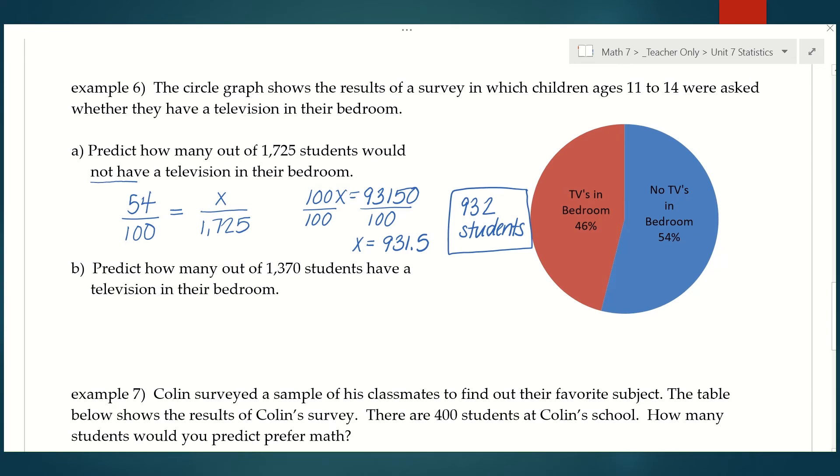Now in part B, they're saying predict how many out of 1,370 students have a television in their bedroom. So they're changing a couple things. It's changing the total number of students and we're looking at how many actually do have a television. Back to the survey results, 46% out of 100 have a TV in their bedroom. And I want to know how many is that if the total is 1,370? So 100x, 46 times 1,370 is 63,020 divided by 100 is 630.2, so 630 students.